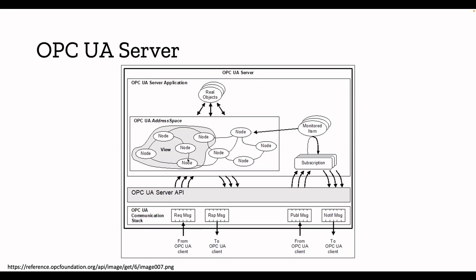The view is basically a subset of the address space. It restricts the nodes that the server makes visible to the client. For example, if client A needs to access certain nodes to get data, by creating a view you are making only those specific nodes accessible to that client — all other nodes are not accessible. This is one of the unique features of OPC UA for security, and that's the purpose of views.